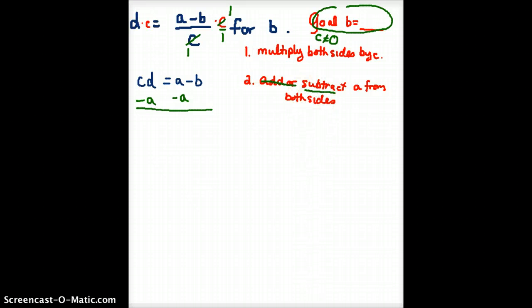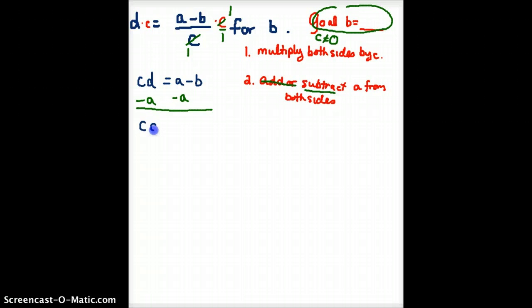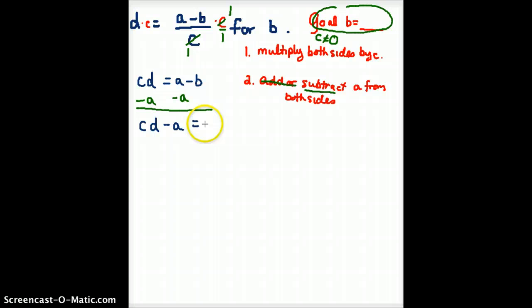All right, so now we get CD minus A. Those don't look like like terms to me, so I am simply going to write CD minus A. Remember, only like terms can be combined. So these have variables that are different variables, so they cannot be like terms. Then A minus A is 0, I'm not going to write the 0, and then I get minus B.